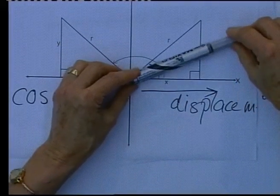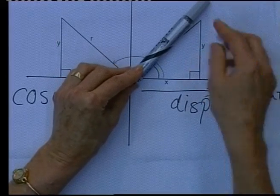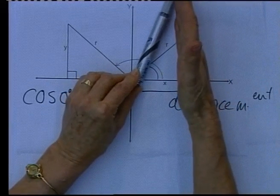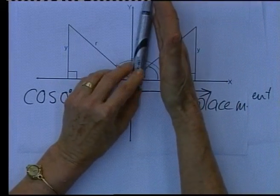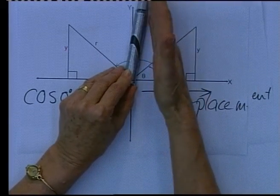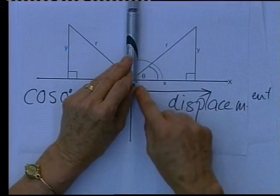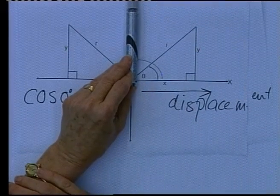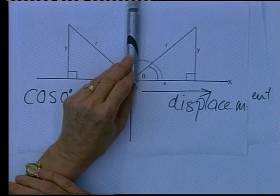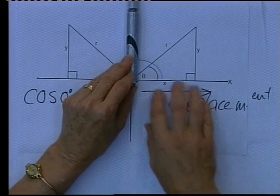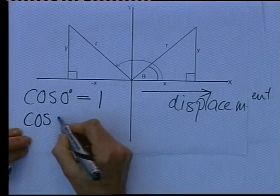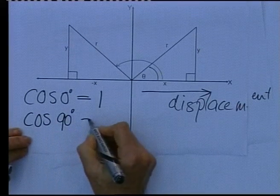As the angle increases, you can see that the value of x decreases. When the angle reaches 90 degrees, x equals 0. So cos 90 — cos theta — will then be 0 divided by r, which gives you 0. So cos 90 equals 0.